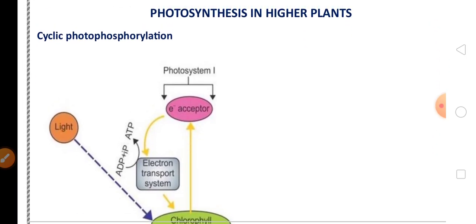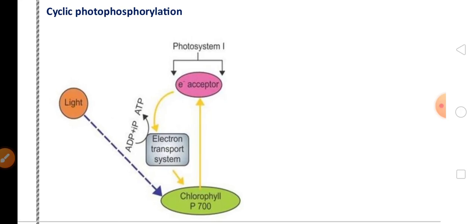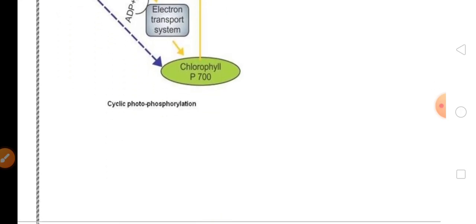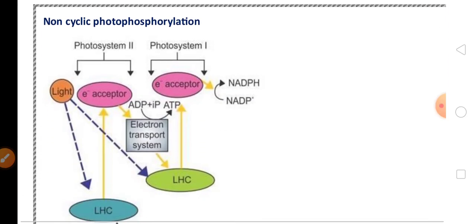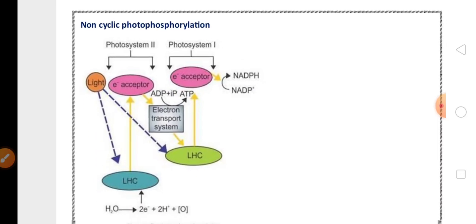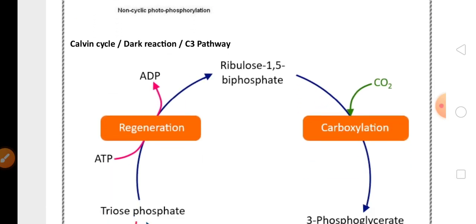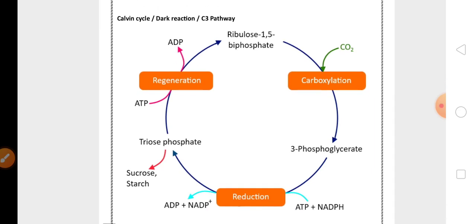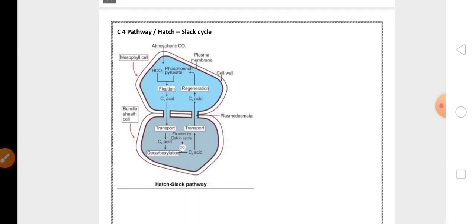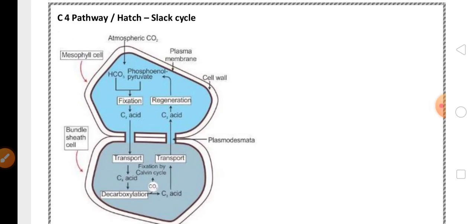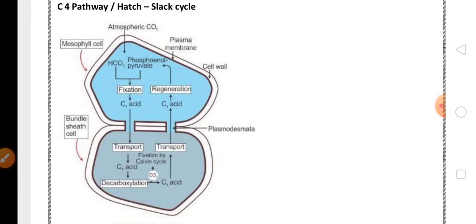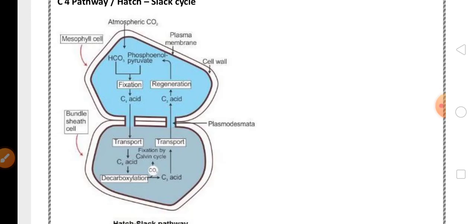From Photosynthesis in Higher Plants, the representation of cyclic photophosphorylation or non-cyclic photophosphorylation — also called the Z scheme — is very important for three marks. There are also two important five-mark pathways: the Calvin cycle, also called the dark cycle or C3 cycle, and the C4 pathway or Hatch-Slack cycle.